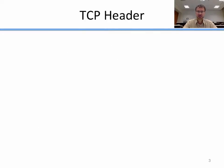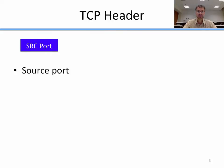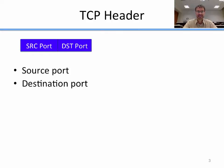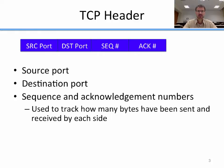The TCP header within a packet contains a few items. The first is the source port, then the destination port, which is the port on the destination server machine you're trying to connect to. Then it has two fields for the sequence number and the ACK number. These two numbers are used together to track how many bytes have been sent and received by each party in the communication.